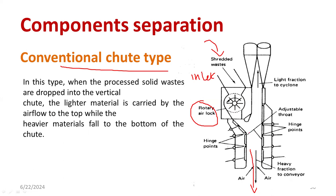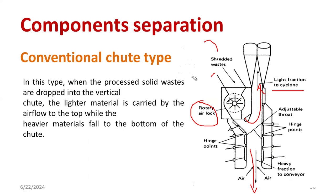The lighter particles will go to the upper side, where the heavier particles will settle down. So you can easily collect the heavier particles at the bottom, where lighter particles can be collected at the upper side. Artificially you are creating a cyclone. This method is generally called as conventional chute type. Low density material goes to the upper side where high density particles go down. You can draw this diagram in the examination and for your presentations as well.